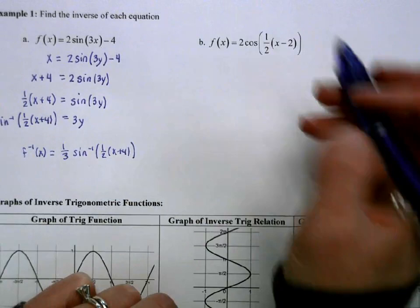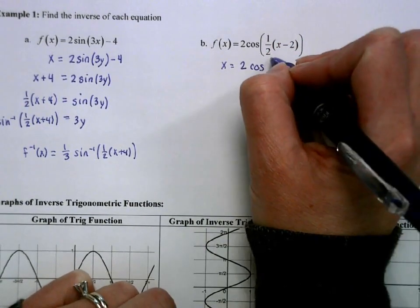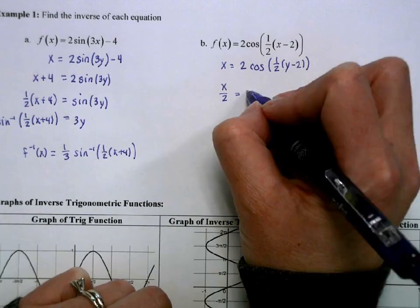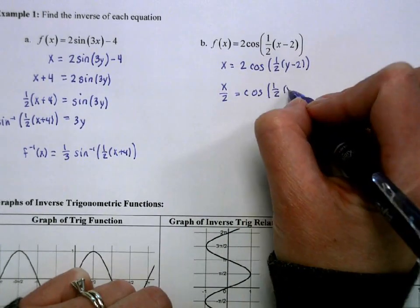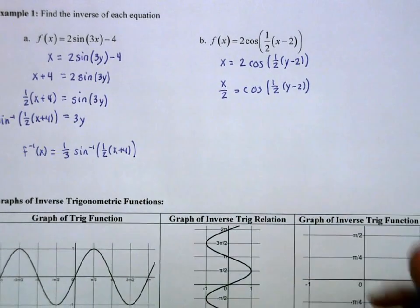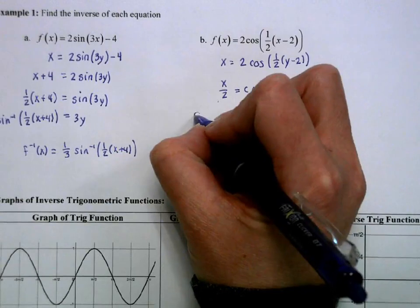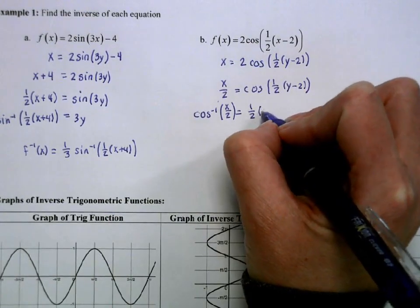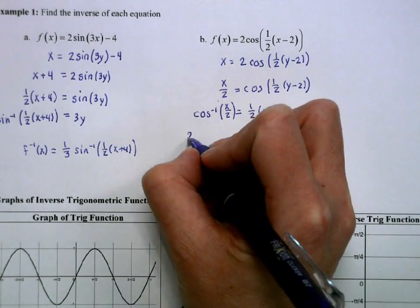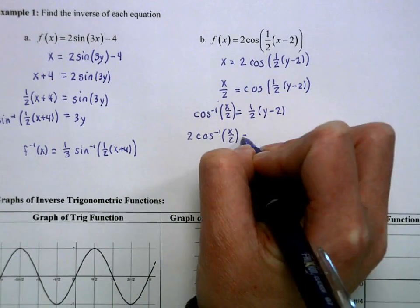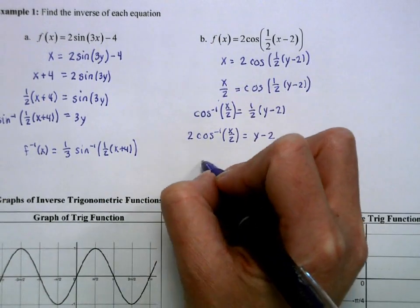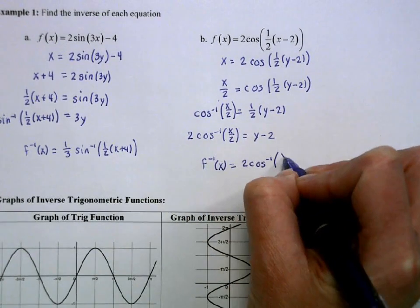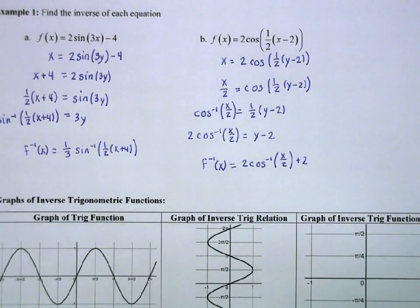Let's repeat that over here. I'm going to divide by 2. Once I have that cosine isolated — if the cosine of this is this, then the arc cosine or cosine inverse of this equals the inside piece. I'll multiply by 2 and then add 2. So my inverse is going to be 2 cosine inverse of (x over 2) plus 2. There are more pieces to this, but that would be our equation.